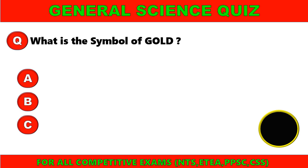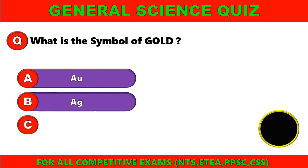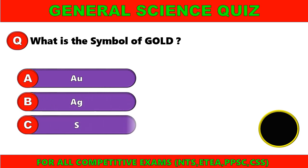What is the symbol of gold? A. AU, B. AG, C. S. The right option is A. AU.